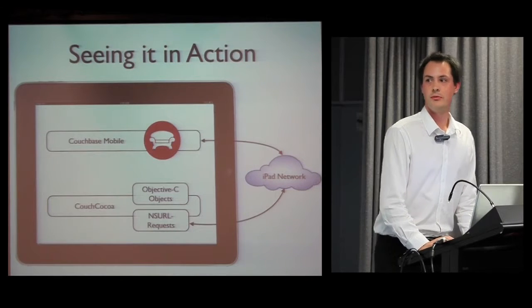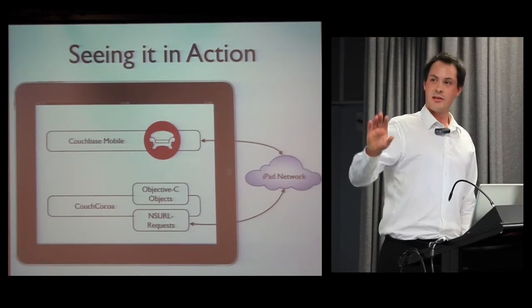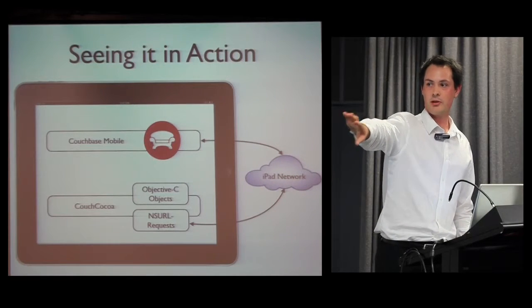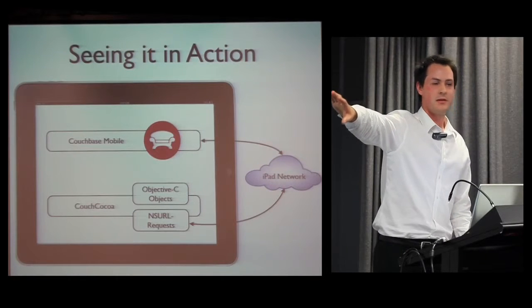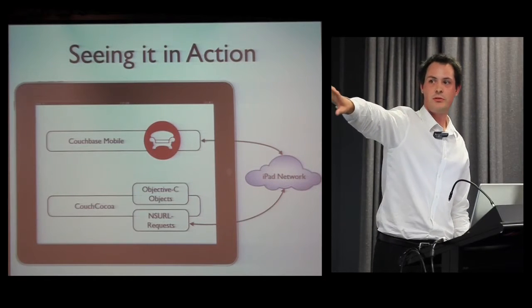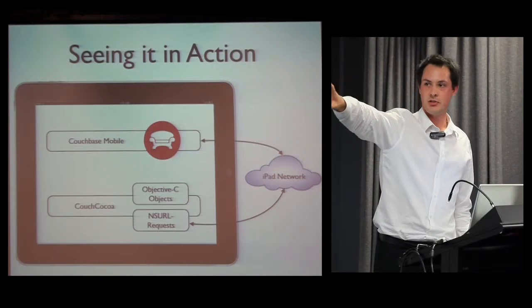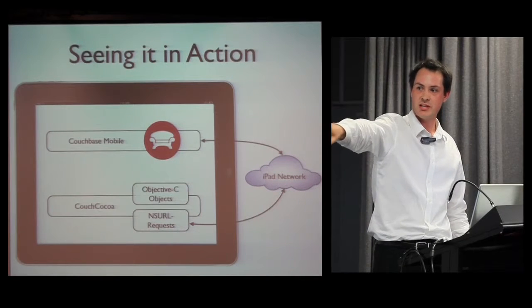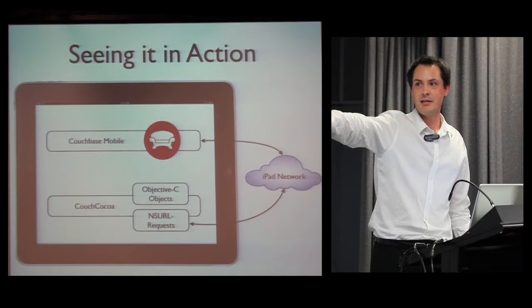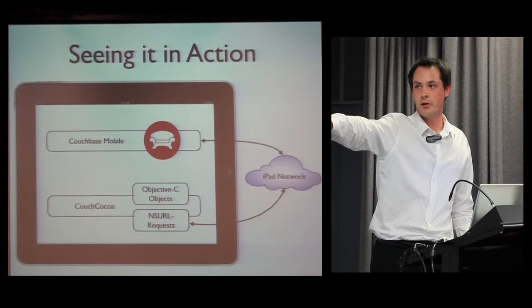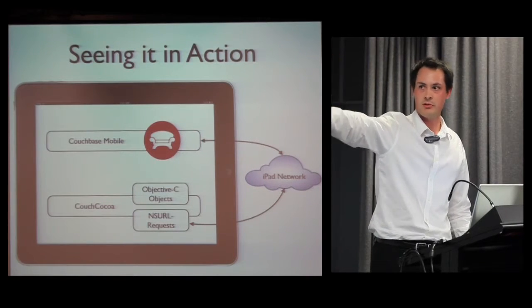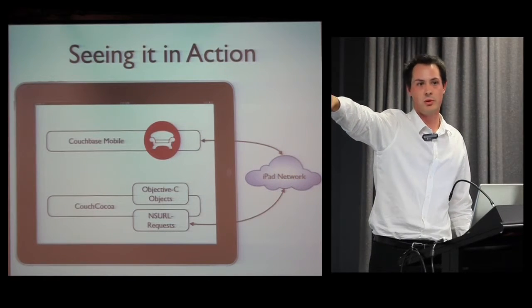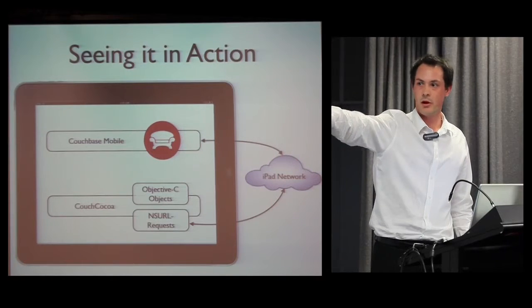To make this a bit more understandable: Couchbase Mobile at the top is the Erlang component. CouchCocoa at the bottom is the Objective-C layer. There are no direct lines connecting those two. Once you've called Couchbase Mobile and told it to start, you don't interact with it anymore. You now use CouchCocoa, which makes URL requests hitting the iPad network over the 127.0.0.1 address, which then gets redirected to Couchbase Mobile via RESTful API calls.